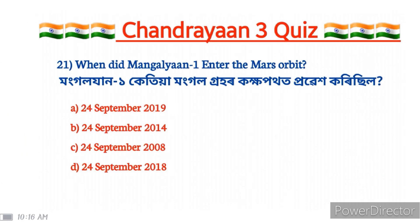When did Mangalyaan-1 enter the Mars orbit? The correct answer is option B: 24 September 2014.